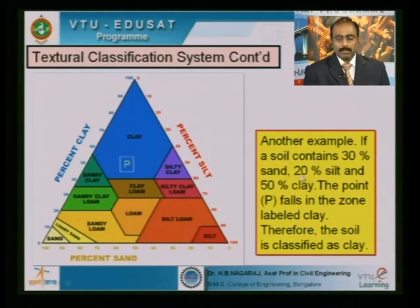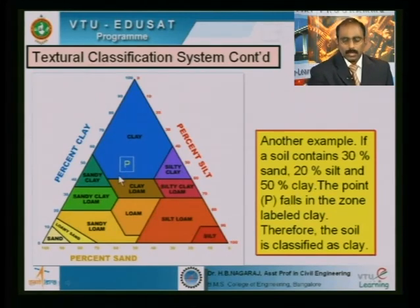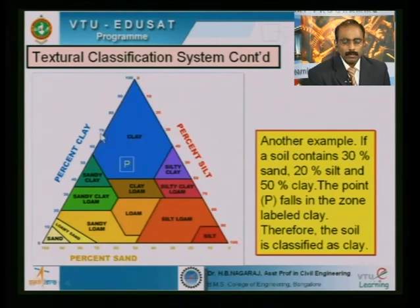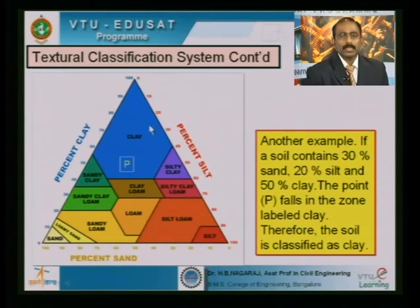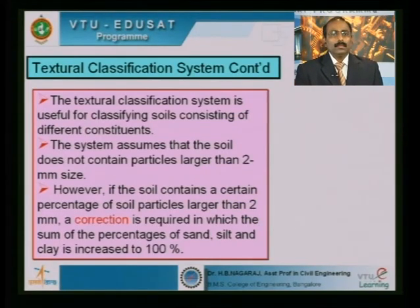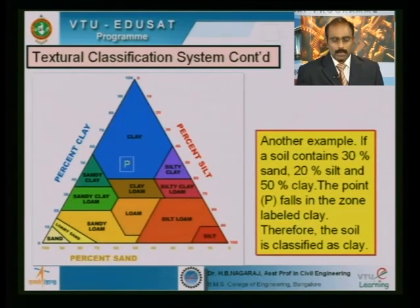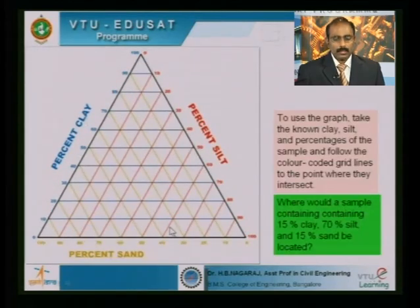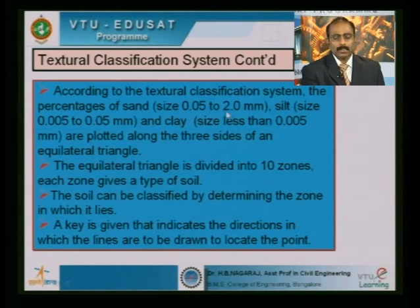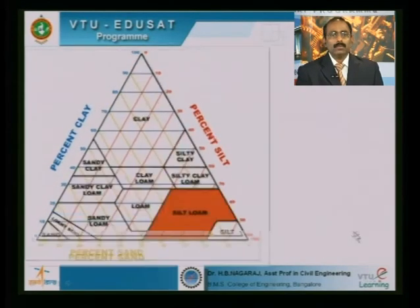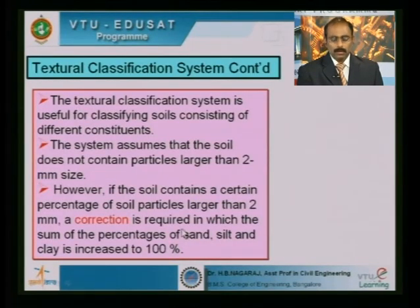This system is useful for classifying soils with different combinations of constituents. However, if the soil contains particles larger than the maximum specified by the system, a correction must be applied and the percentages normalized to 100%. The textural terminology transitions from sand to loamy sand, sandy loam, loam, sandy clay loam, clay loam, silty clay, silty clay loam, silt loam, silt, and pure clay — loam being a combination of sand, clay, and silt in certain proportions.